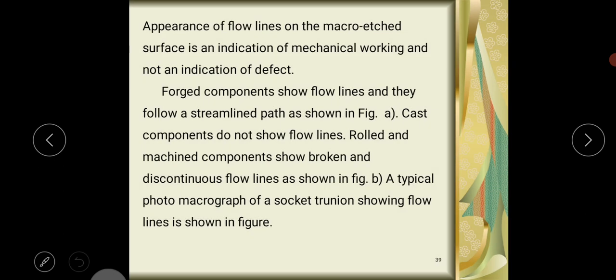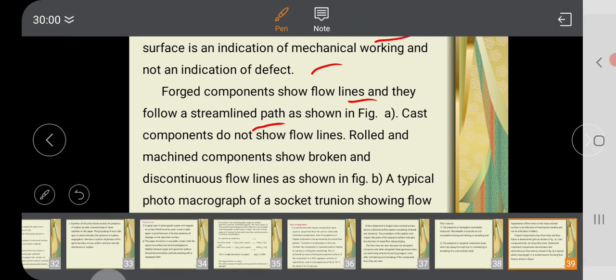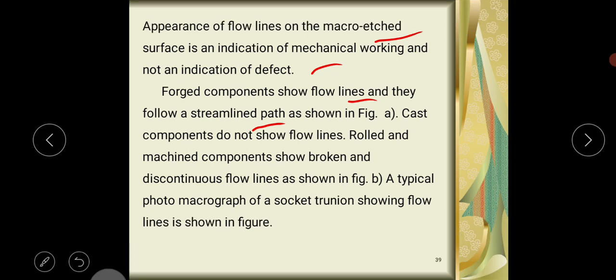Appearance of flow lines on macro etched surface is an indication of mechanical working and not an indication of defect. Forged components show flow lines and they follow a streamlined path as shown in figure A. Next, cast components do not show flow lines. Rolled and machined components show broken and discontinuous flow lines.